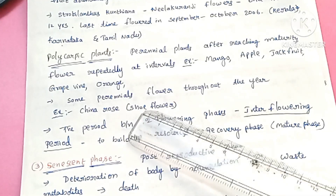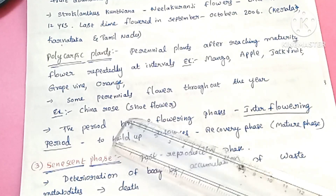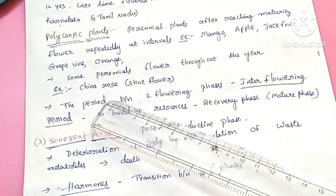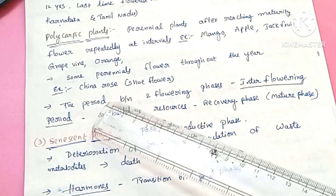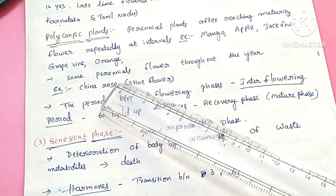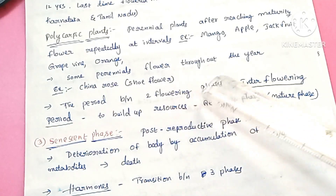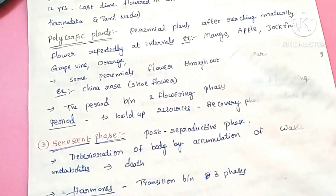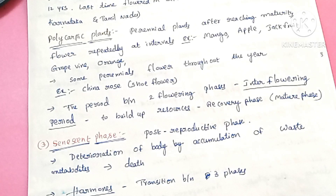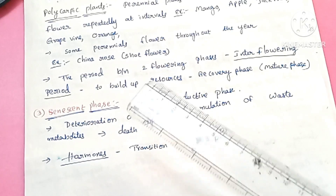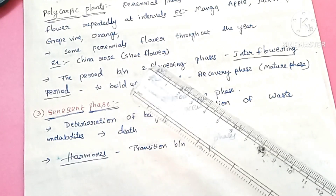Some perennial plants, such as Chana Rose (Hibiscus), flower daily throughout their life. There is a period between two flowering phases called the inter-flowering period.